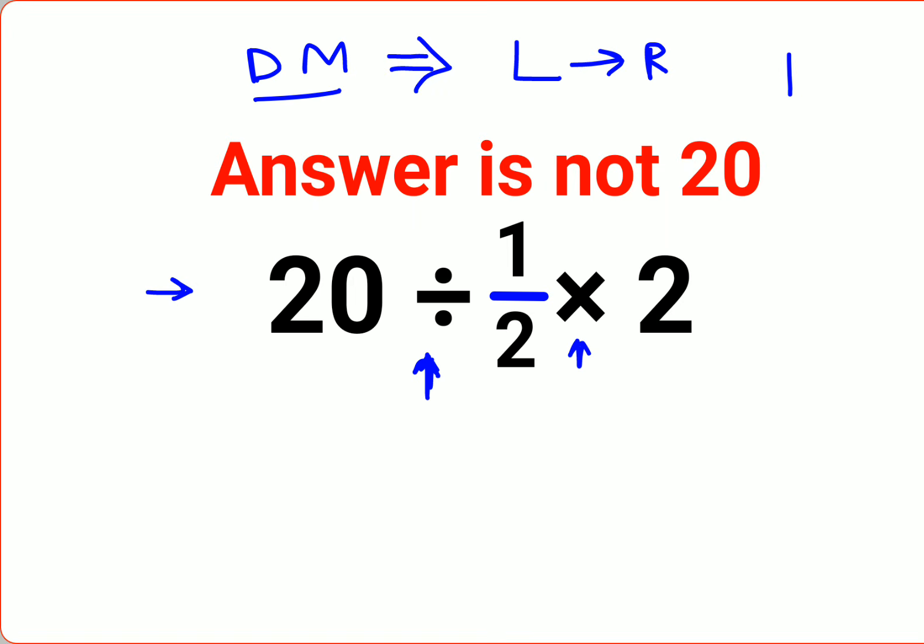Whenever you have a division sign, you will follow the rule of KCF, where K stands for keeping the first number as it is, C stands for changing the division sign to multiplication, and F stands for flipping or taking reciprocal of 1 upon 2, which gets you 2, and we'll keep the rest as it is.